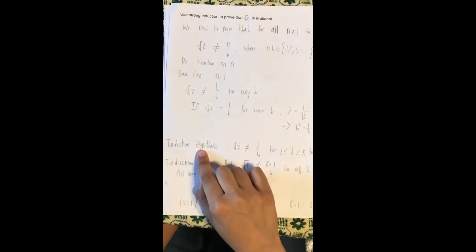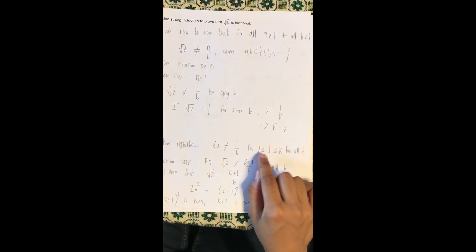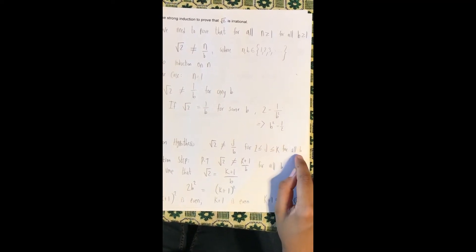In the inductive hypothesis, we assume that square root of 2 is not equal to j over b for any j between 1 and k, for all b.